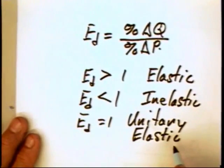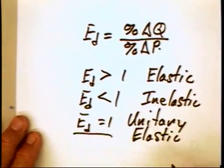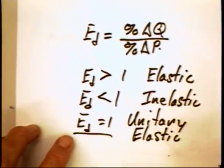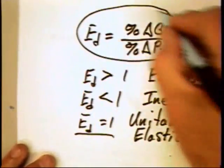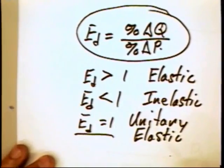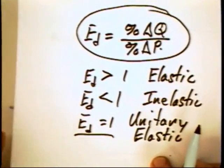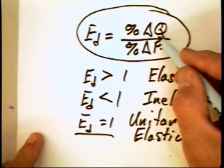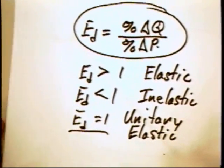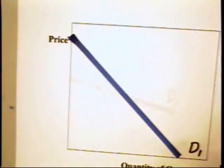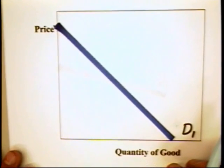The unitary elastic definition comes from the fact that the coefficient equals one. Notice that the elasticity coefficient is this ratio — the percentage change in quantity over the percentage change in price. This coefficient has nothing to do with the slope of a curve. Slope is something else, and we can show that by reference to a linear demand curve. Let's take a look.